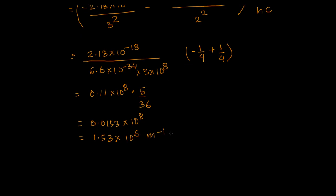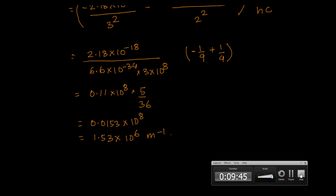So the wave number is 1.53 times 10 to the power 6 per meter. We found 1 over λ, and λ should be in meters, so the unit is per meter. That's our final answer.